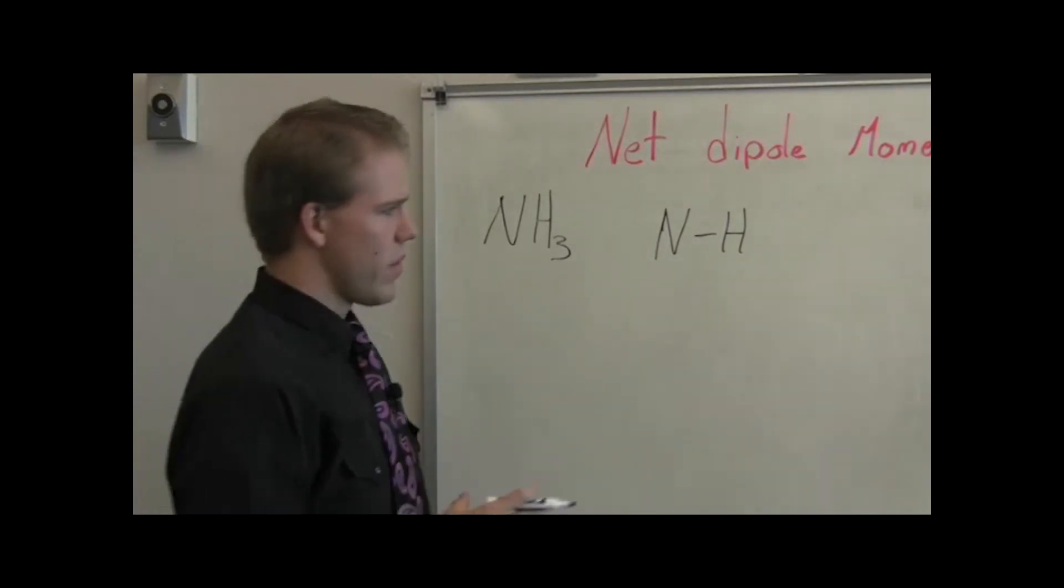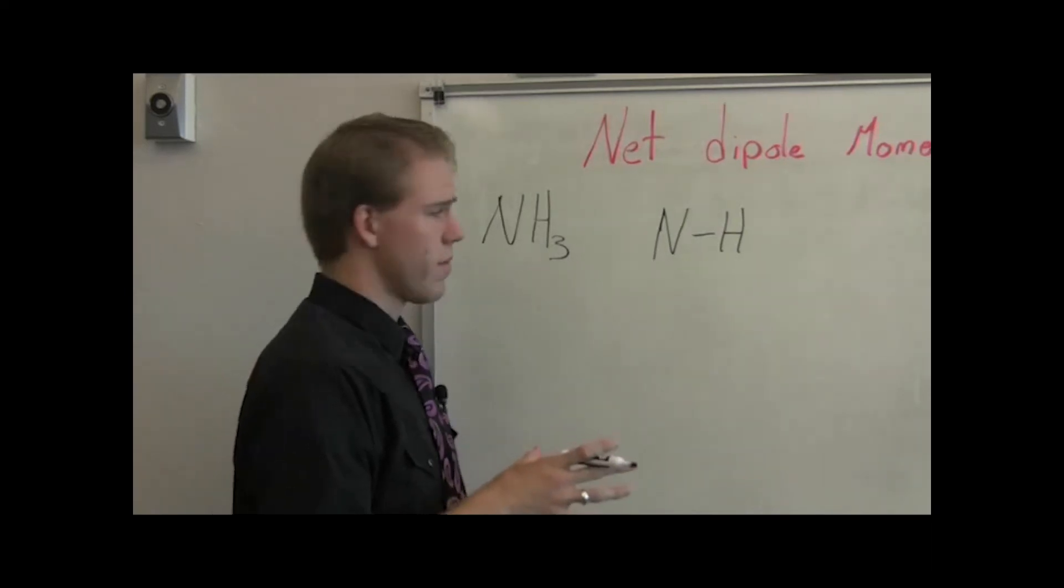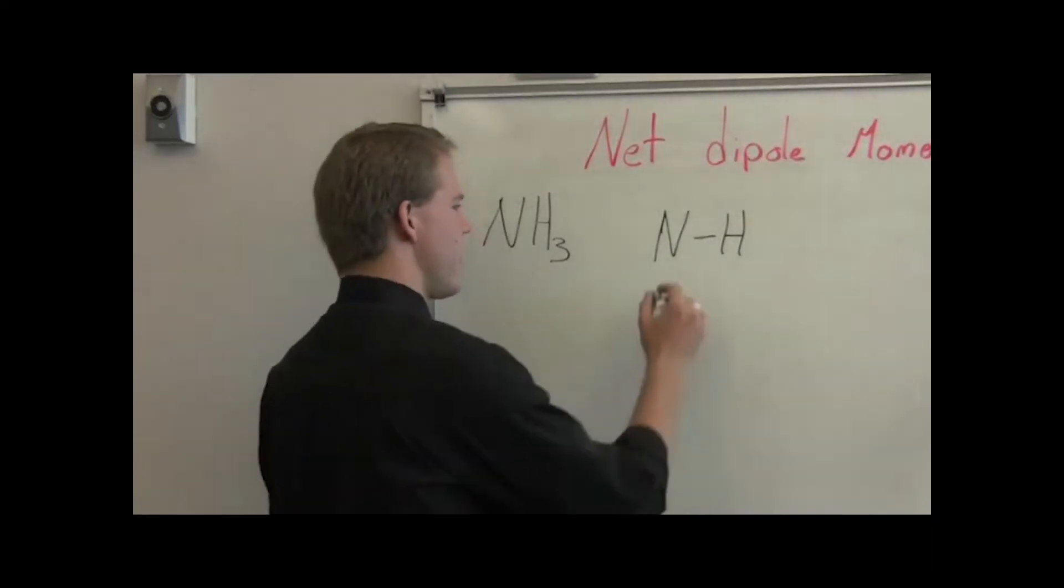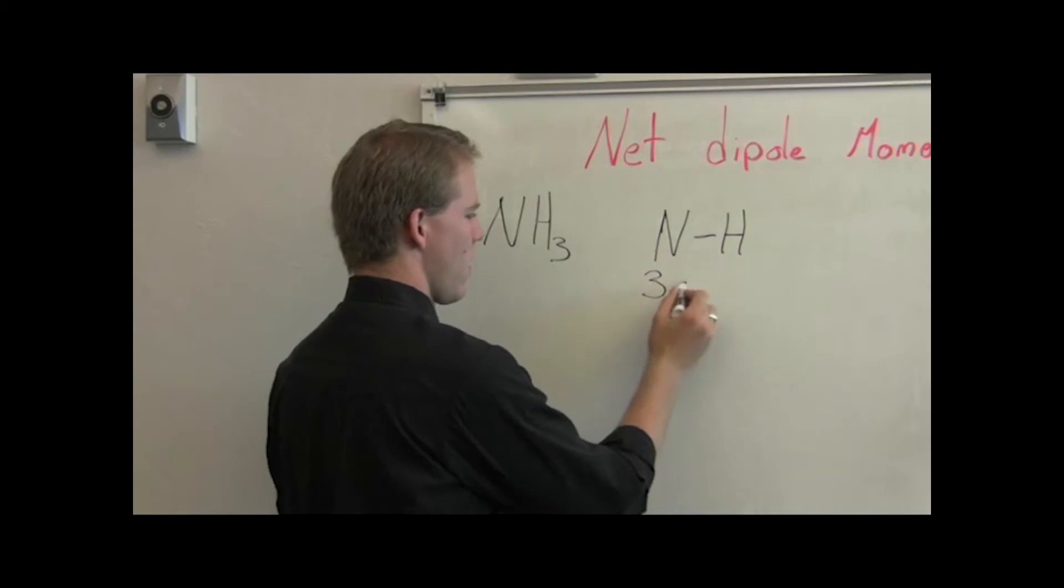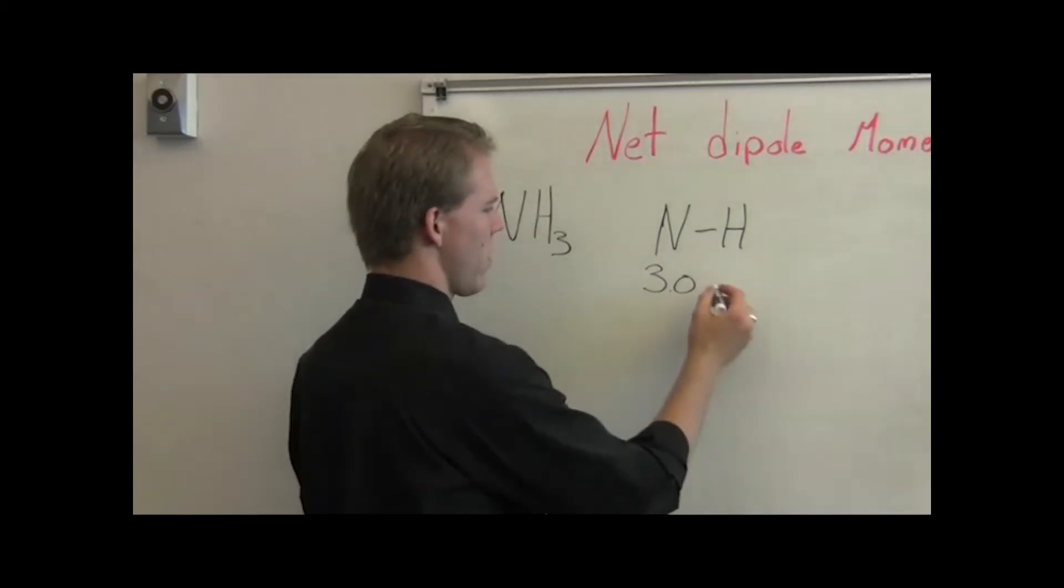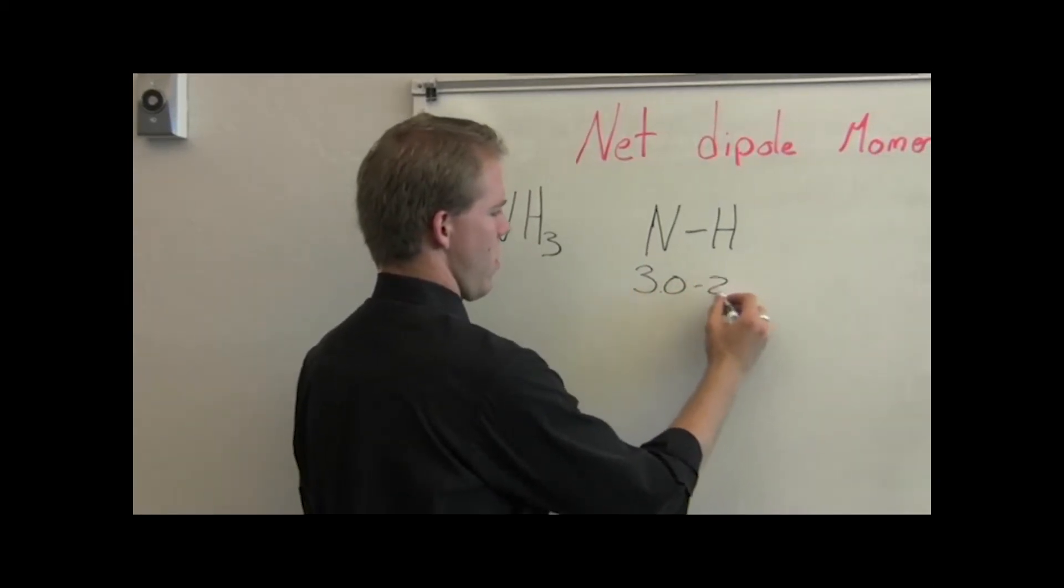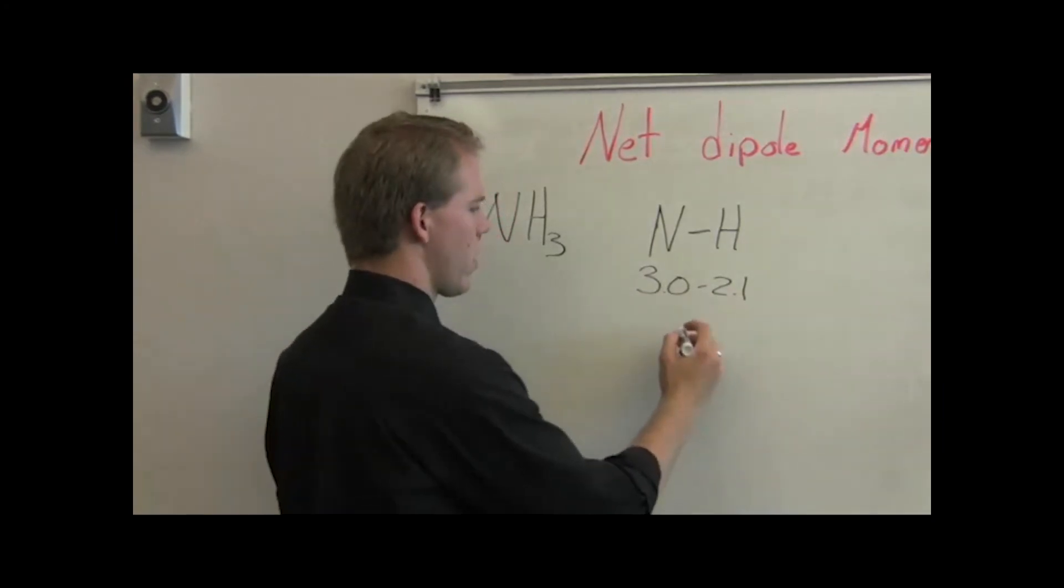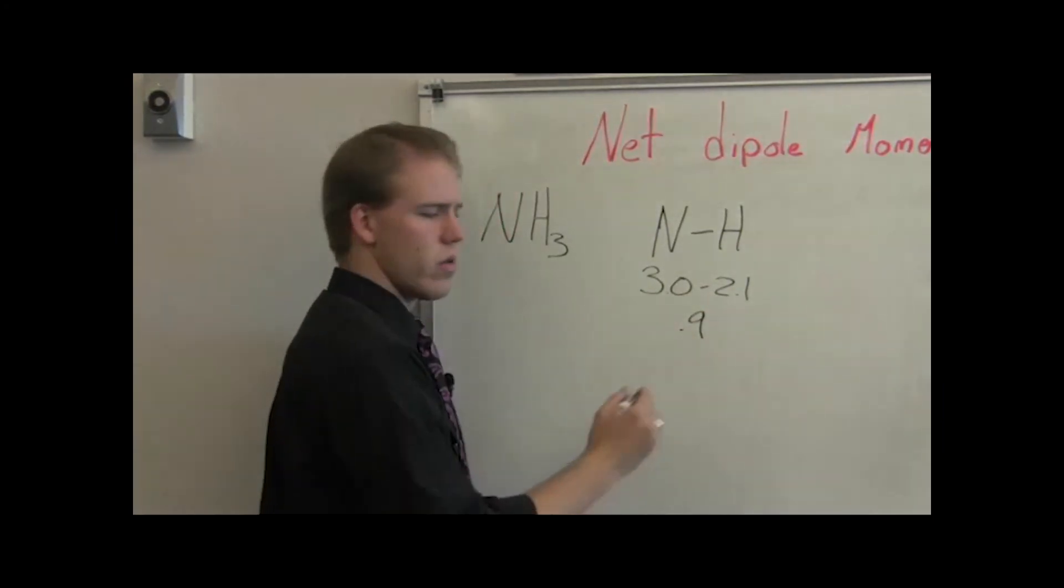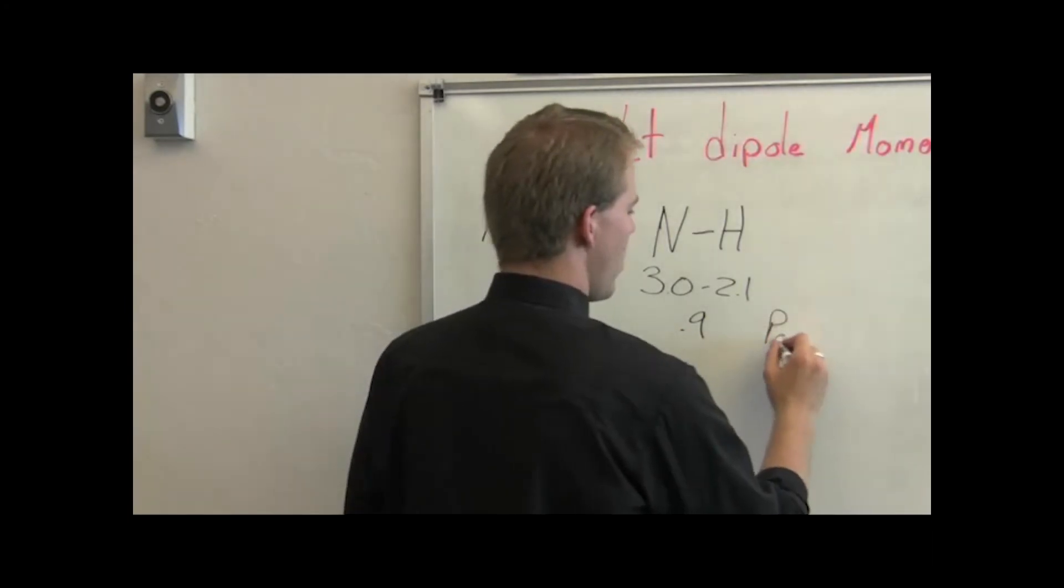The next step is to figure out if these bonds are polar. We do that by using their electronegativity. That of nitrogen is 3, hydrogen is 2.1. So the difference is 0.9, so each bond is polar.